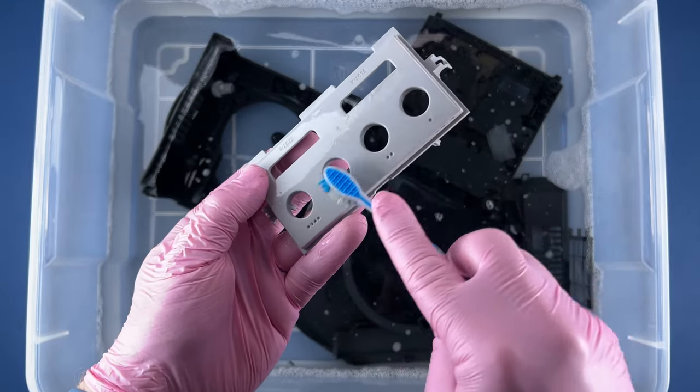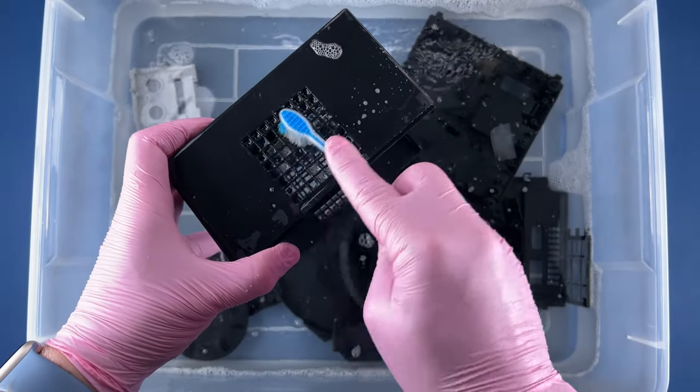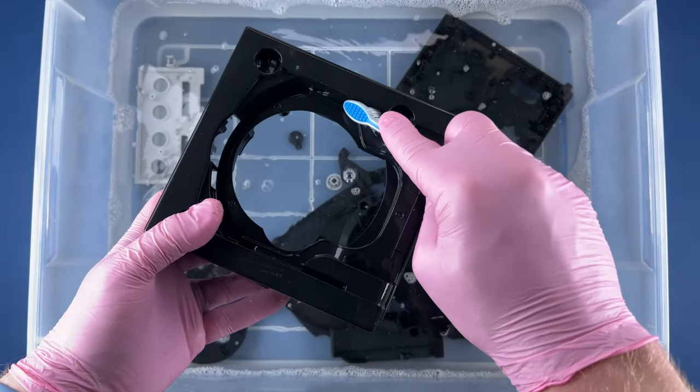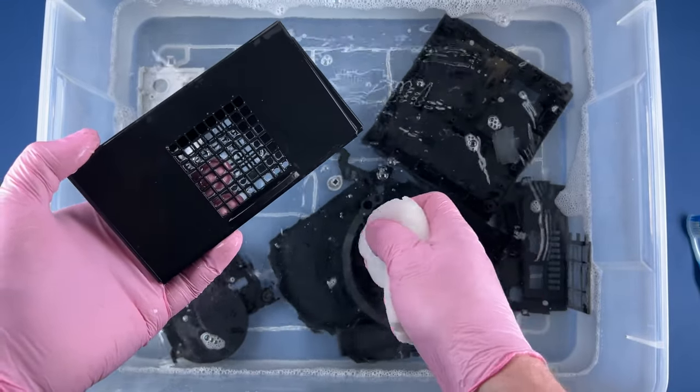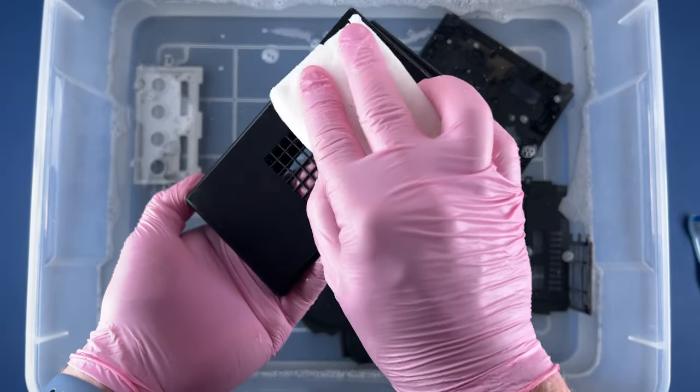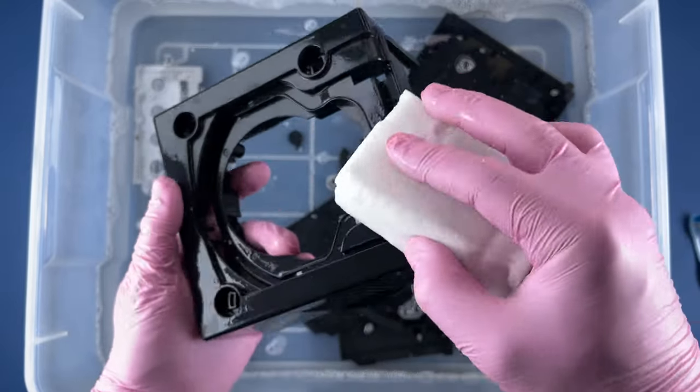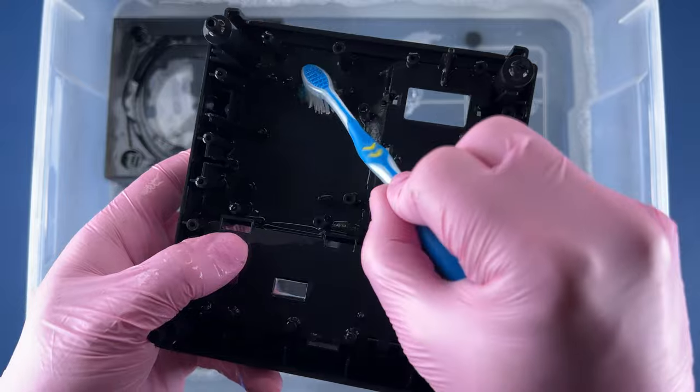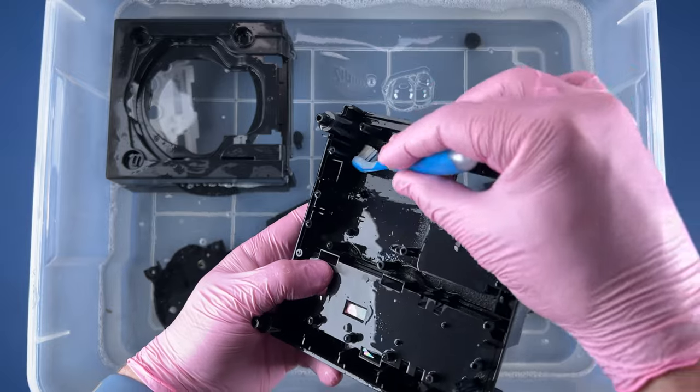Just using a soft bristle toothbrush here. I love using this magic eraser to wipe the outside of these consoles. It just seems to do a really good job. It's kind of a struggle getting this toothbrush down in here. I might have to finish this with a Q-tip later.